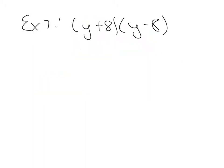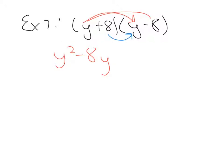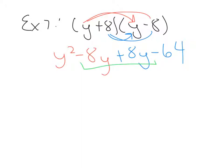Example 7 on page 106: y plus 8 times y minus 8. Same thing — double distribute. y times y is y squared. y times negative 8 is negative 8y. 8 times y is positive 8y. 8 times negative 8 is negative 64. Look at the like terms in the middle — I hope you notice that these cancel because one is negative 8 and one is positive 8. So these like terms actually cancel, and we end with y squared minus 64.